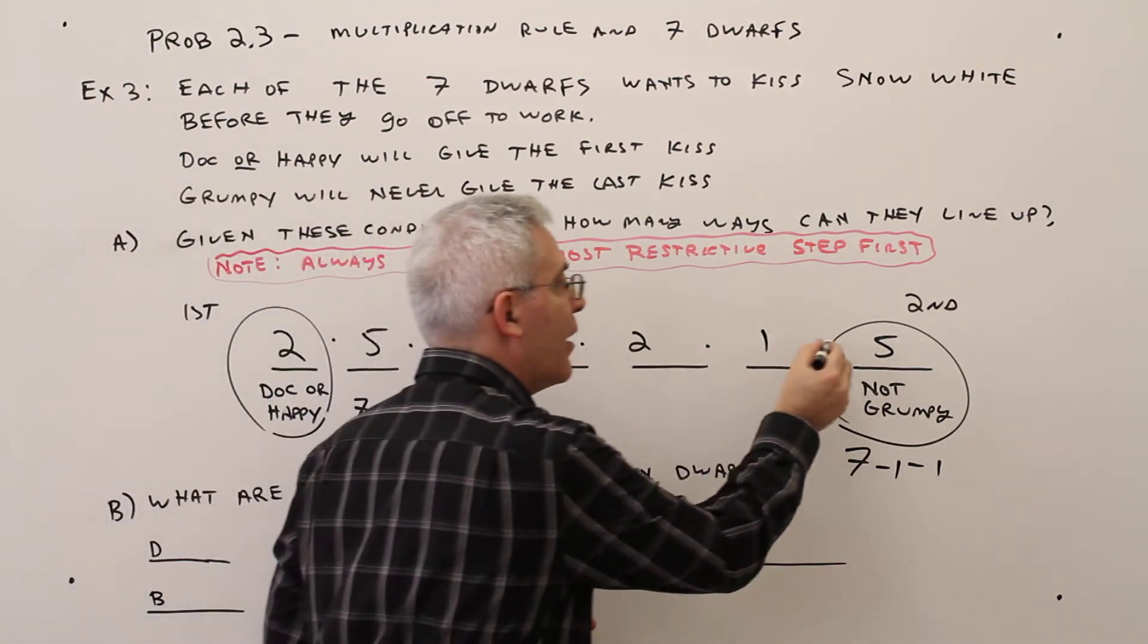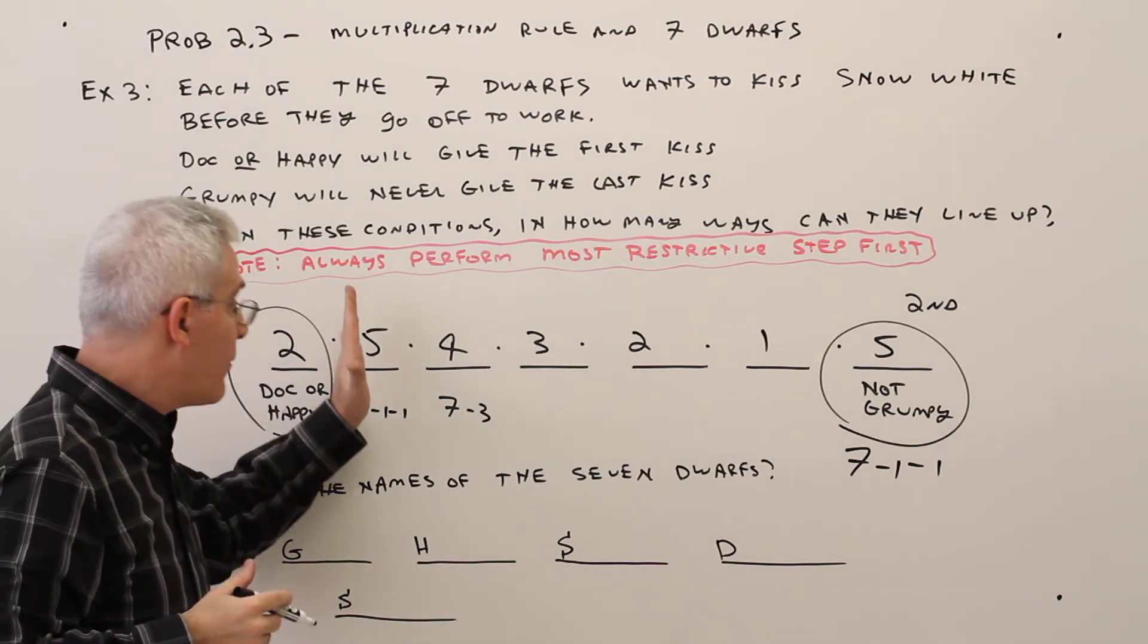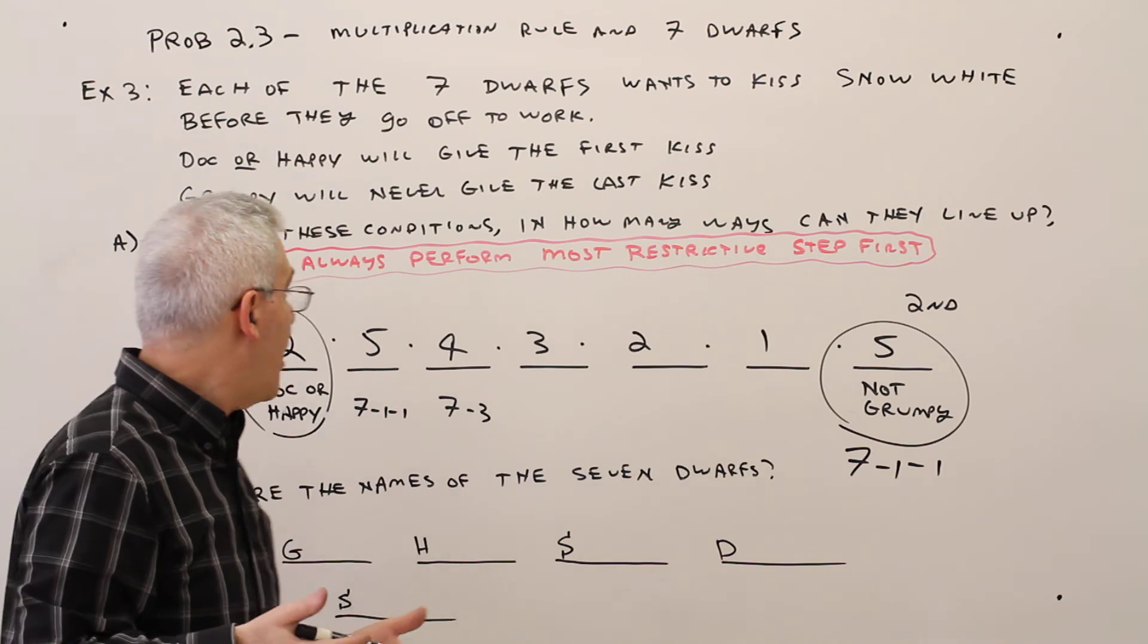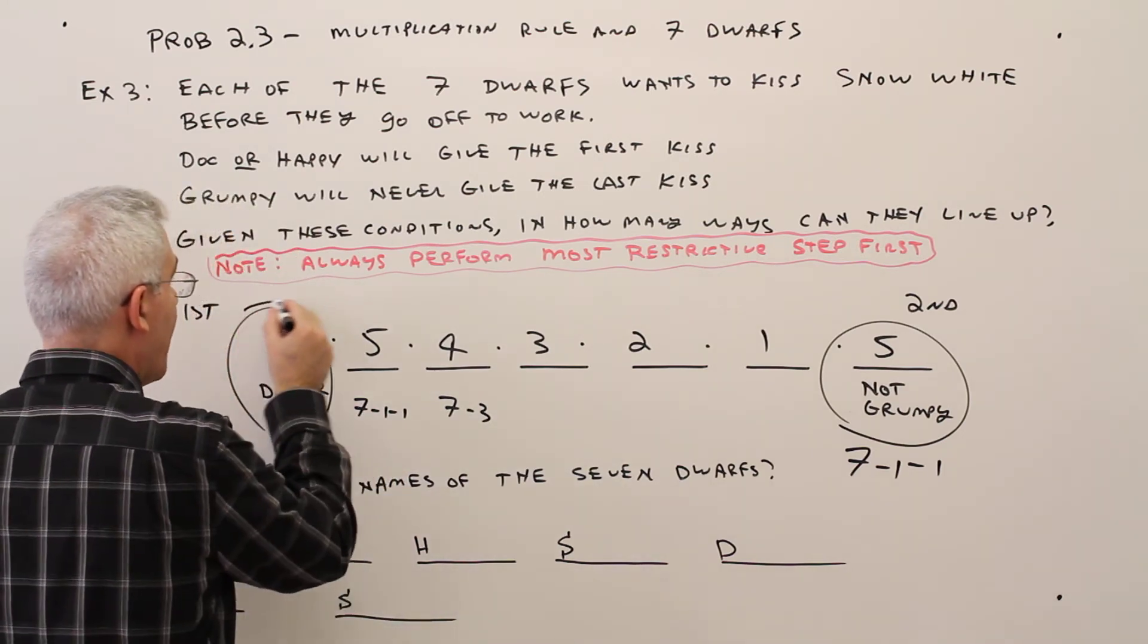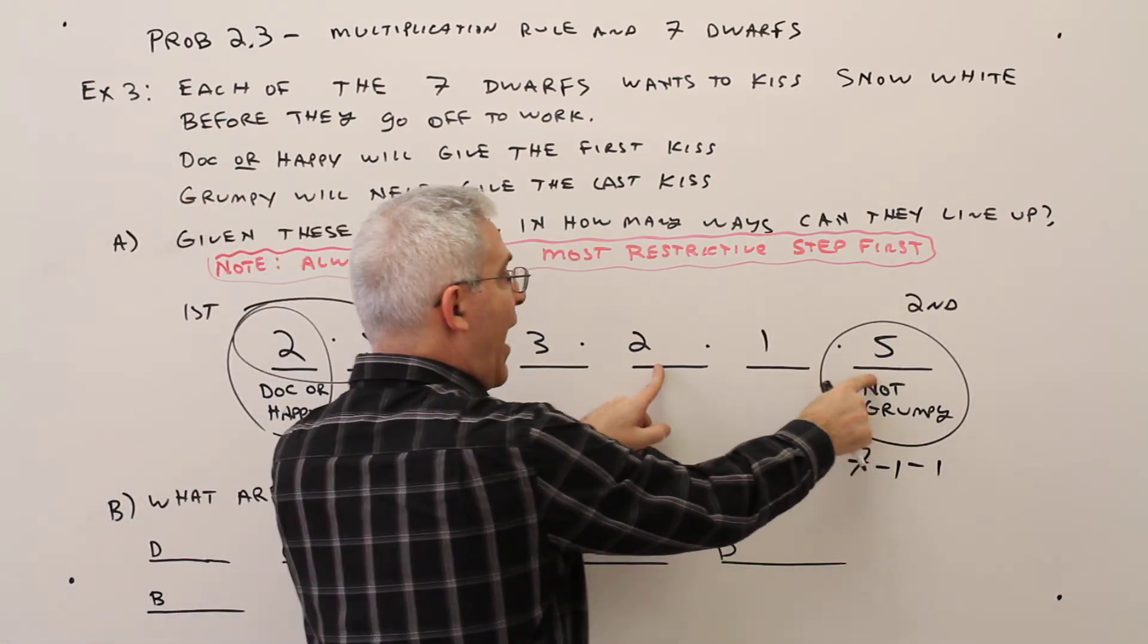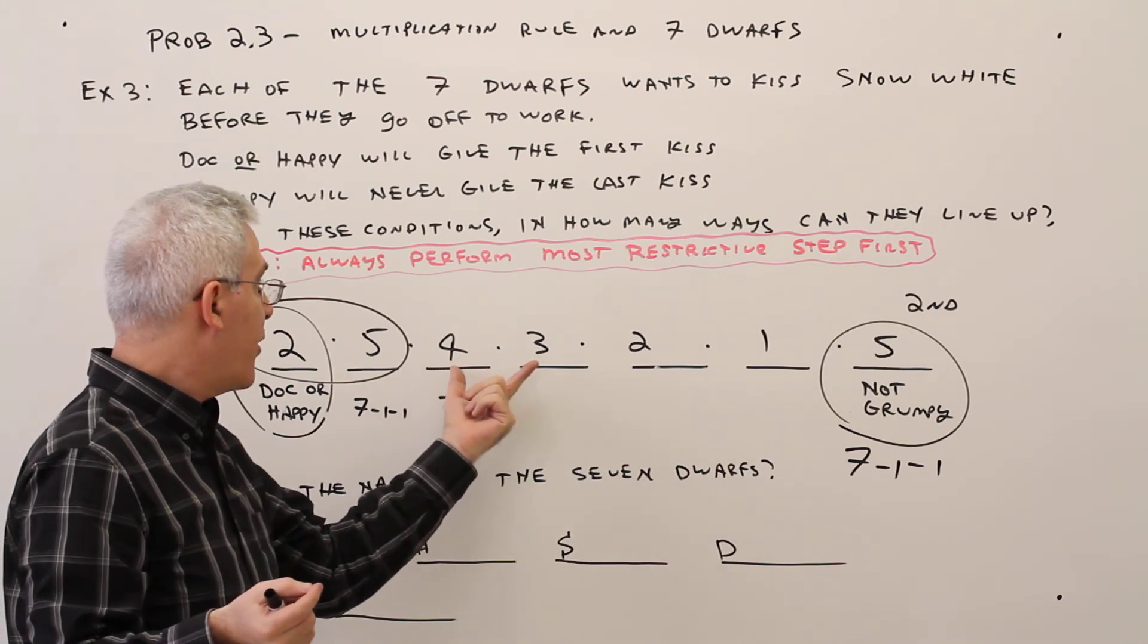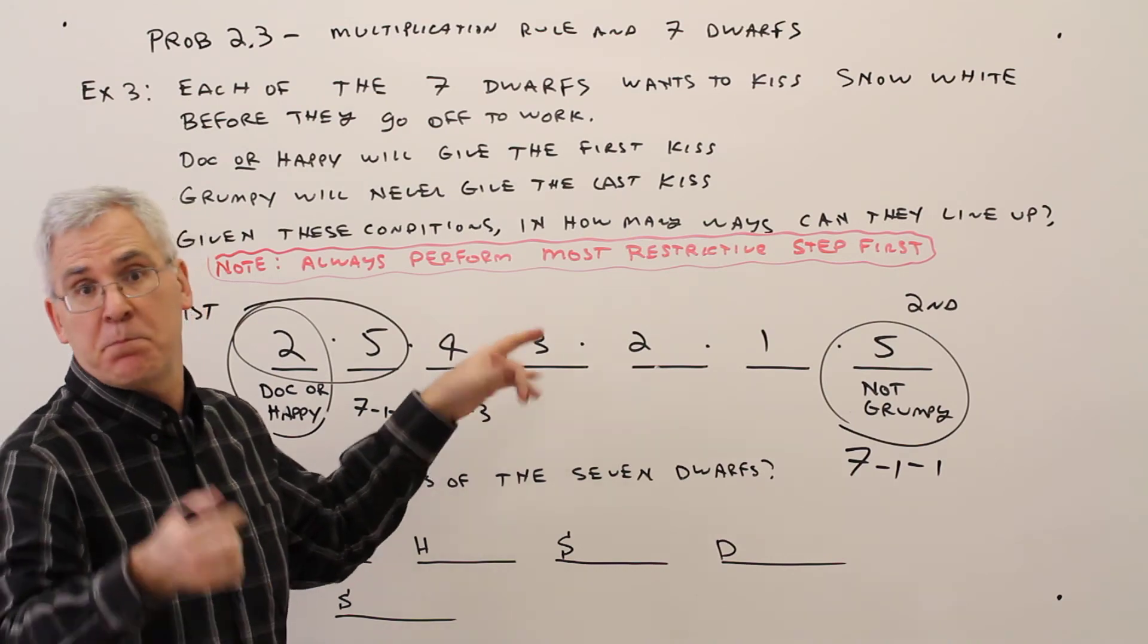And I'm going to multiply because it's the multiplication rule. The number of ways of doing this event times this event times this event, etc. All right, I can do this without a calculator. So let me show you this. Two and fives, that's a ten. Two and five, that's a ten, so I'm up to a hundred. And then over here, I've got four by three, that's twelve, twelve hundred.